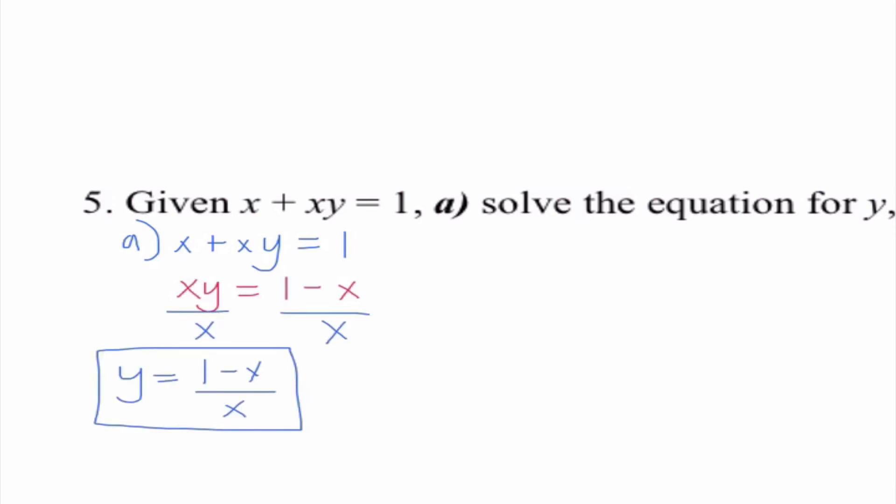So I'm going to divide everything by X. And I get Y equals 1 minus X over X. I could also simplify this and divide both things in the numerator by X. And get Y equals 1 over X minus 1, because X over X is 1. Either of those answers would be completely fine.